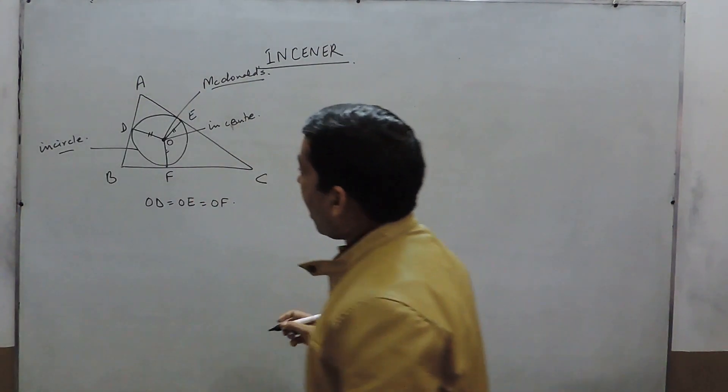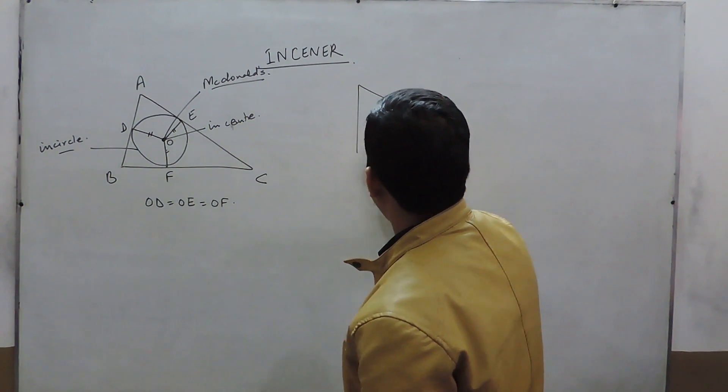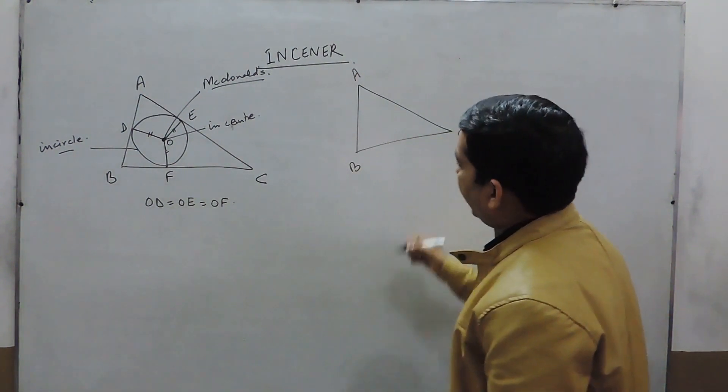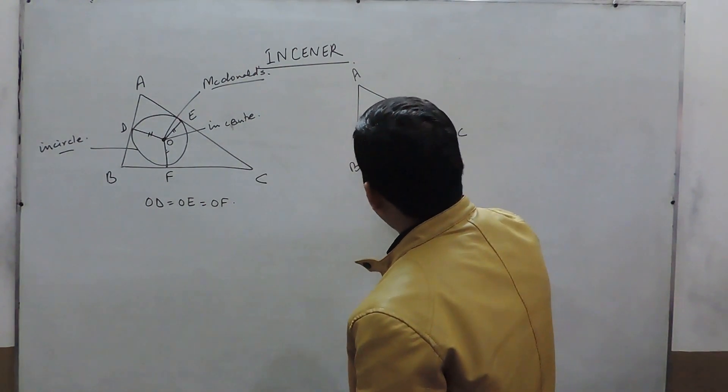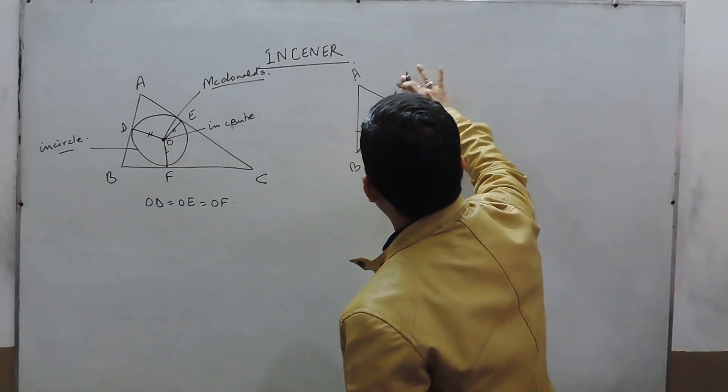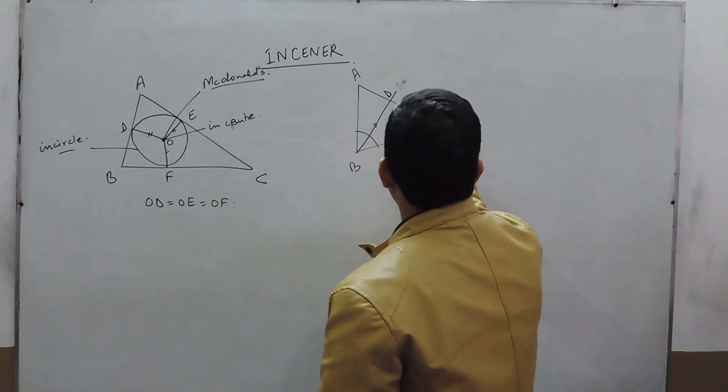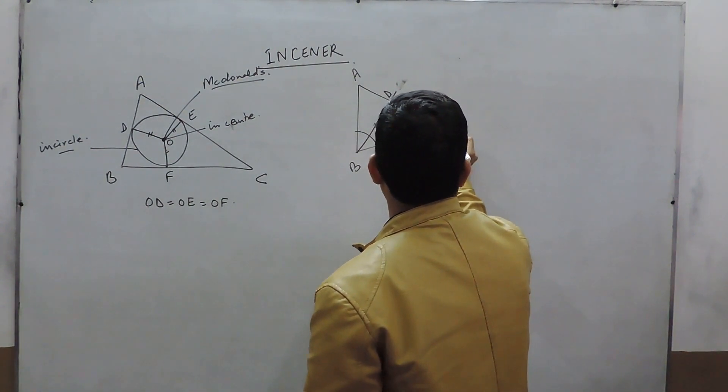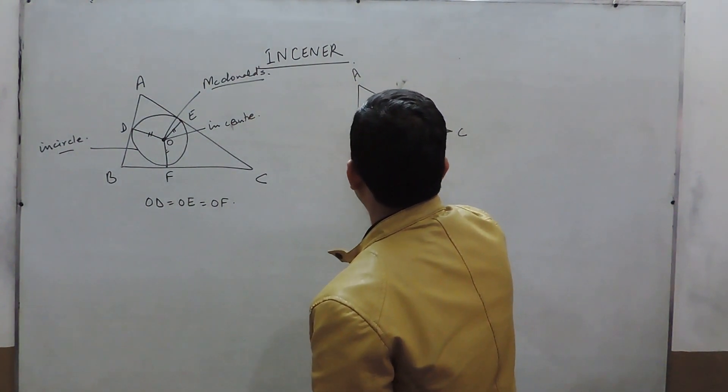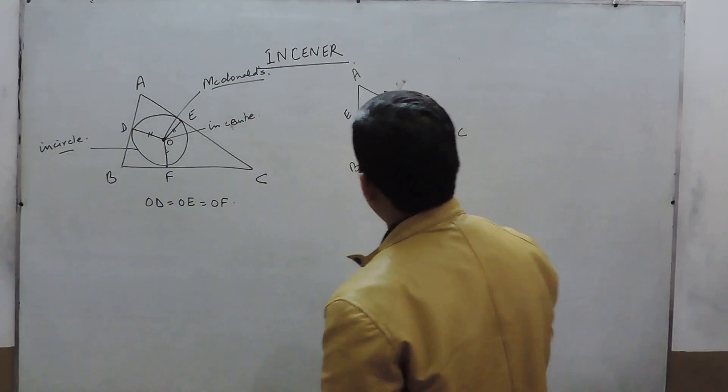Now, how to make this InCenter: if we have triangle ABC, we basically make an angle bisector of our angle, let's say meeting AC at point D. Again, we make an angle bisector of angle C, meeting AB at a point E.